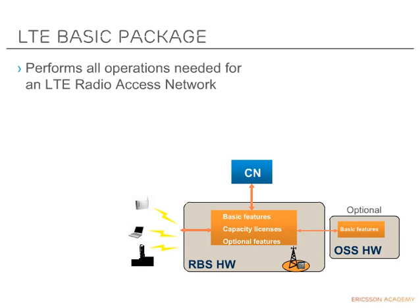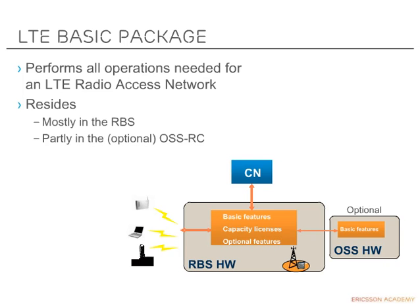The BASIC functions reside mostly in the E-NodeB, but some parts are also in the optional OSS-RC. The main functions of the BASIC package include an operating system for the LTE E-NodeB, including the software platform, as well as functionality needed for basic configuration, fault, software, and performance management. Also included is functionality needed for basic traffic management towards other E-NodeBs and the core network.